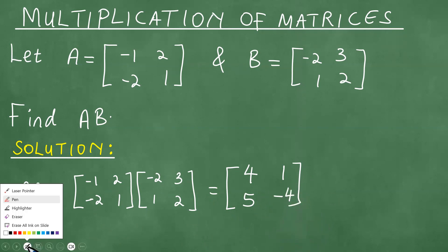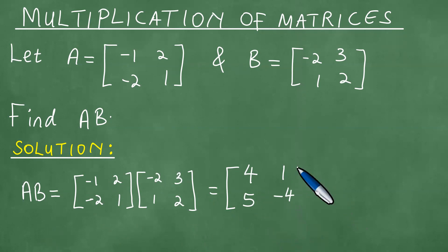This is what we have, and therefore this is the required result. We have found the product AB as required. So AB is the 2 by 2 matrix with entries 4, 1, 5, and -4.